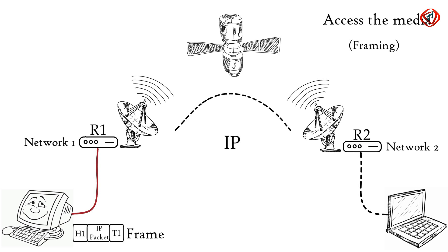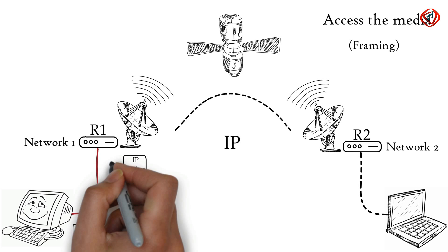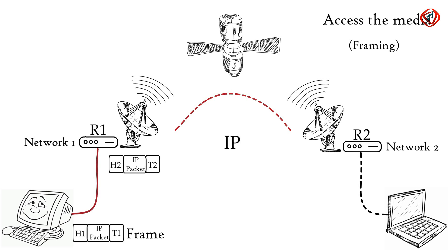Router R1 receives this ethernet frame, decapsulates it to an IP packet, and then encapsulates it again to a frame so that it can cross the satellite link to reach router R2.